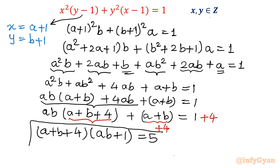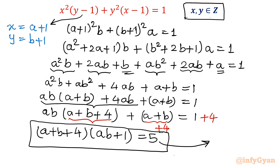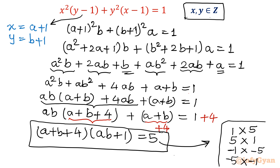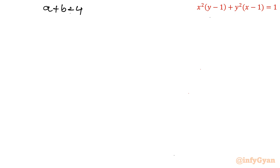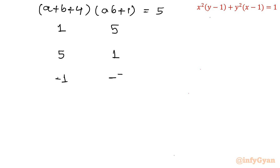Now we will find the integer factor pairs of 5. Because x and y are integers, we consider: 1×5, 5×1, (−1)×(−5), and (−5)×(−1). So (a + b + 4)(ab + 1) = 5 gives us four cases to examine.